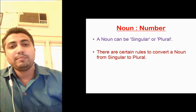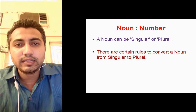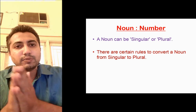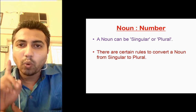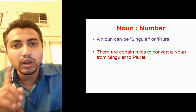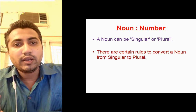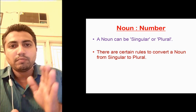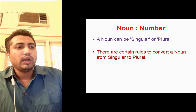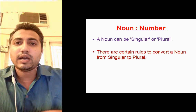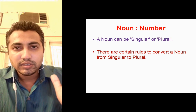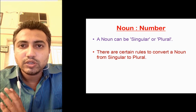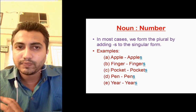Without wasting much time, let us move on to our topic — noun number. Noun number includes singular and plural. A noun which is only one is called singular form and the noun which is more than one is said to be in plural form. So singular and plural make noun number. Today we will be discussing about how to convert singular into plural. There are different rules for different nouns.